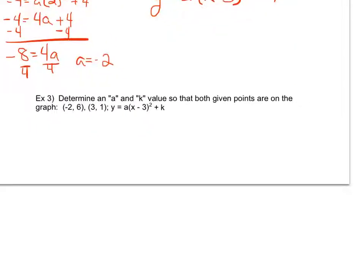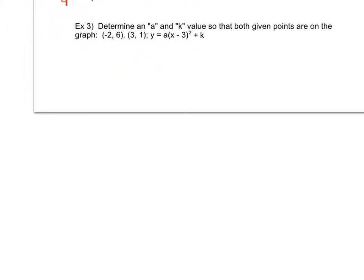Looking at my third and final example, a little bit different. So now I'm asked to actually determine a and k if I'm given two points. Here are my two points, and I'm given a little bit more information. I'm given my h, but not my k, and not my a.